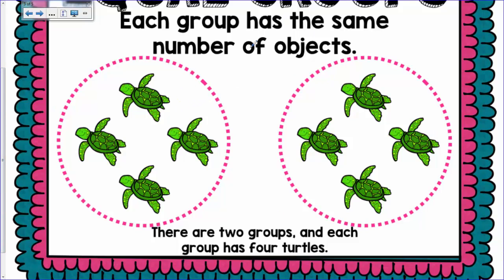So, you can do two groups of 4 equal 8. That is how you would write it.